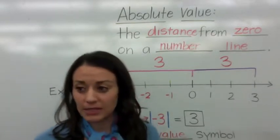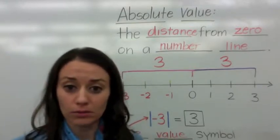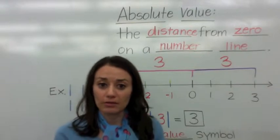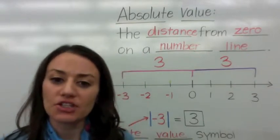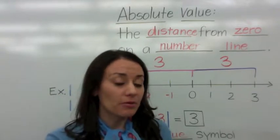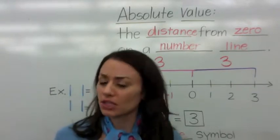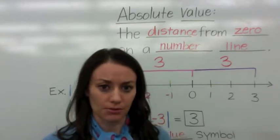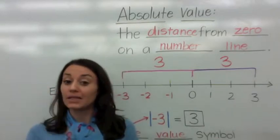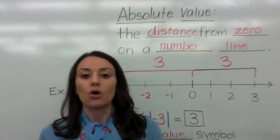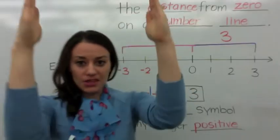Absolute value is distance, and distance is always positive. So say that you walk two miles to the mall and you walk two miles back. Does it mean that when you go back from the mall to your house, you go negative two miles? Is there such a thing as negative two miles? No. So your total trip would be two plus a positive two, which is four.